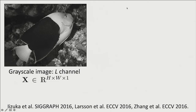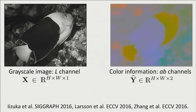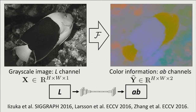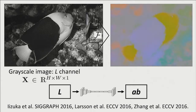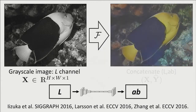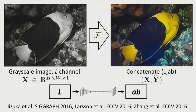Last year was a watershed year for automatic image colorization. Several simultaneous methods proposed by Izuca, Larson, and ourselves showed surprisingly good results using deep networks. The idea is to take a deep network, train on millions of images, to directly map from the grayscale image to the color information. We can then concatenate the input and output and hopefully achieve a plausible colorization of the input grayscale image.